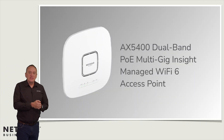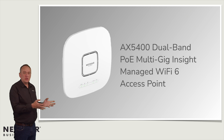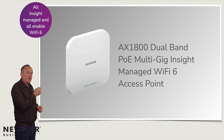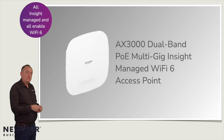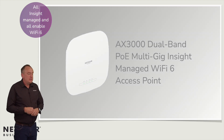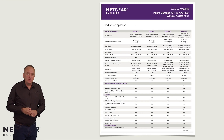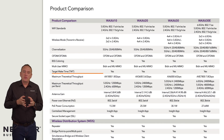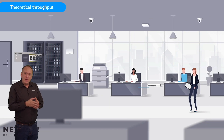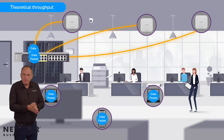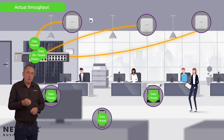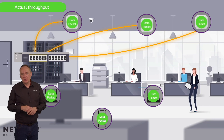Here we can see the latest Netgear Business Pro Wi-Fi portfolio, as of Q2 2023. They're all Insight managed and they're all Wi-Fi 6 enabled, with one model being Wi-Fi 6E. There are several key parameters which you should pay close attention to. The first being the total theoretical throughput — theoretical means this is the maximum throughput under the most optimal conditions, and could vary from actual throughput based on the physical environment where there might be a greater impact on radio data transmission.